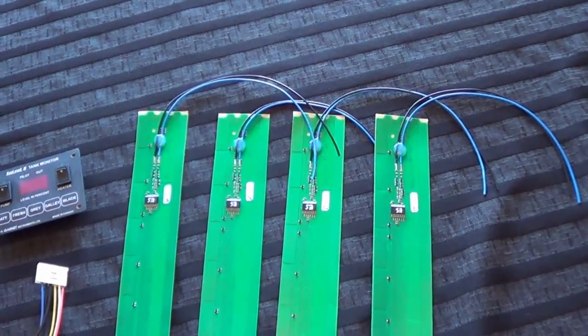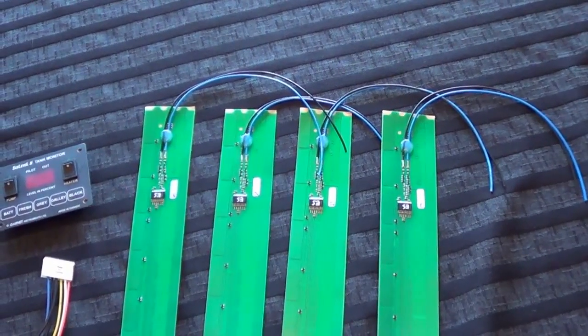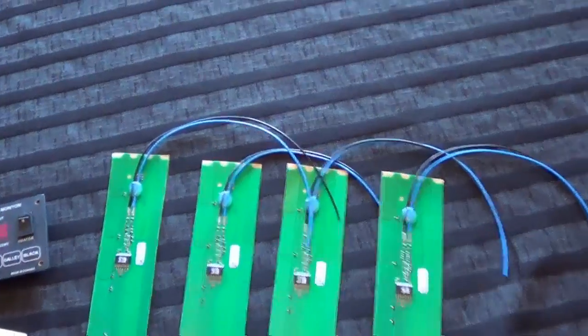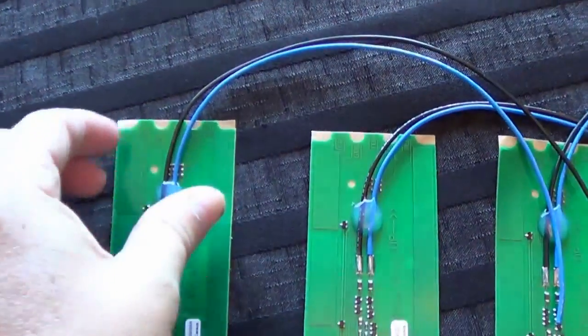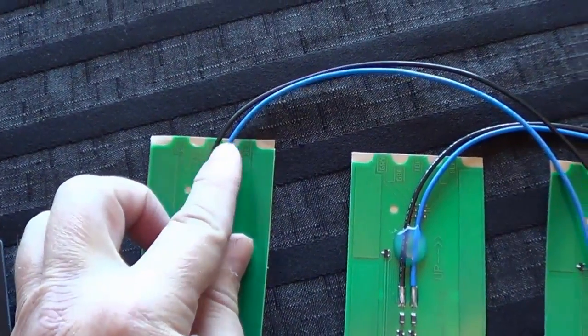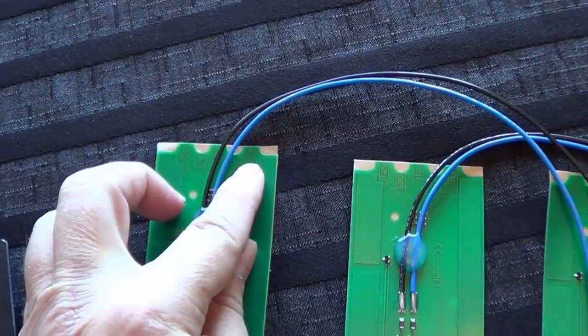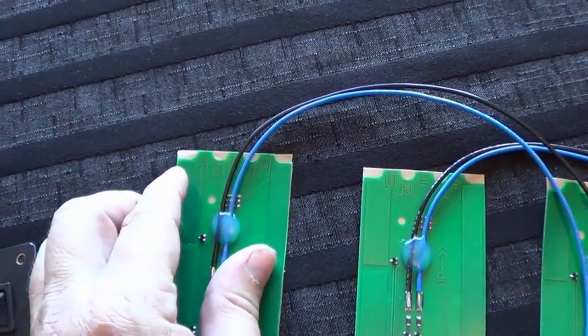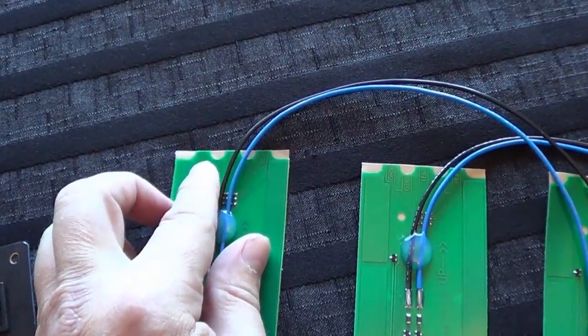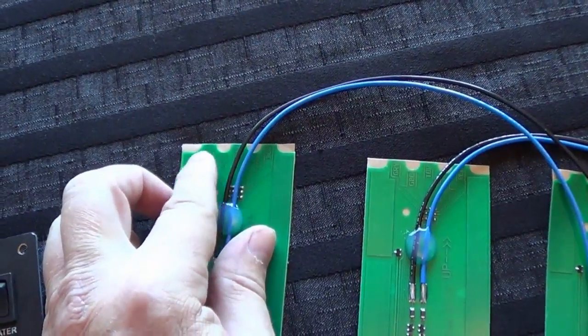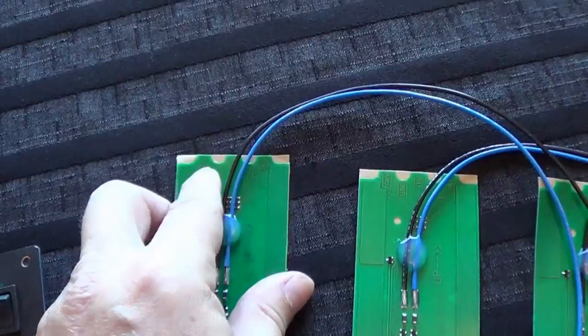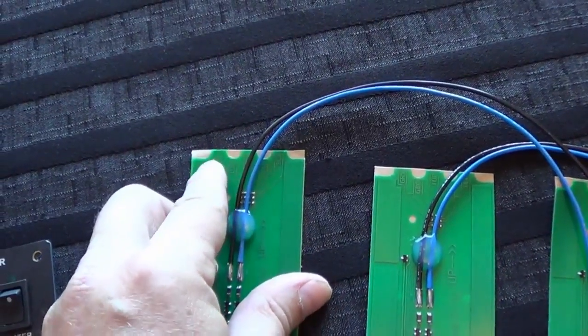So you're probably wondering how does it figure out tank from tank. Well at the top here, you can see these little tabs and they're labeled grey, top and black. And by cutting the tab off at the top, you're cutting through a conductor and then the thing knows which tank is which.